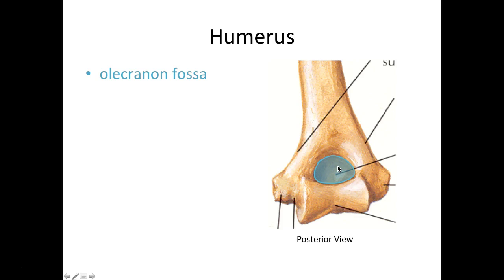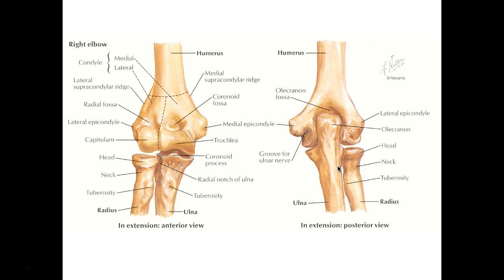The olecranon process is your elbow — if you're touching your elbow right now, that's the olecranon process on your ulna. When you extend your forearm at the elbow, that olecranon process is moving into the olecranon fossa. The radial head rotates around the capitulum and makes contact with the radial fossa; the coronoid process of the ulna rotates around the trochlea and makes contact with the coronoid fossa; and in extension, the olecranon process makes contact with the olecranon fossa.